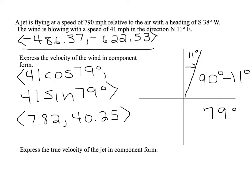All I need to do is add those two numbers together, so negative 486.37 plus 7.82 leaves me with negative 478.55, and negative 622.53 plus 40.25, negative 582.28.